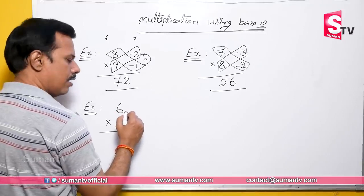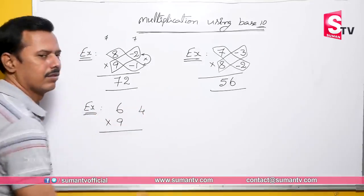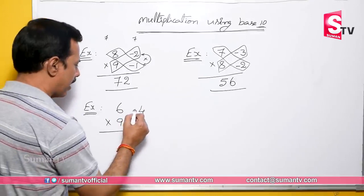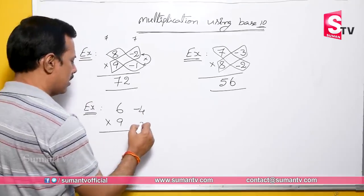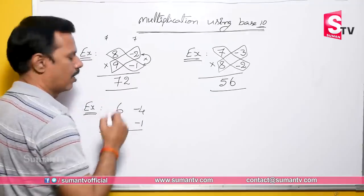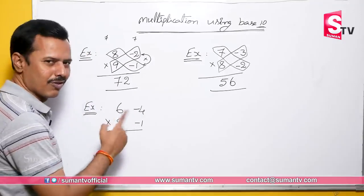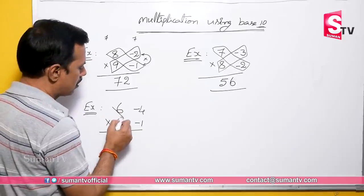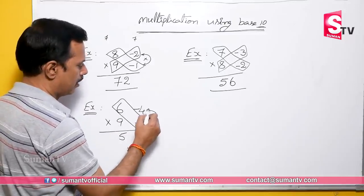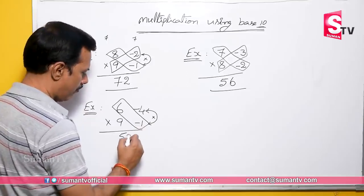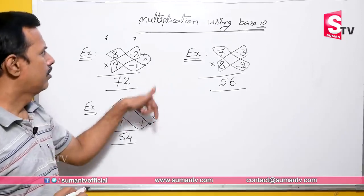So: 6 is less than 10 — it's 4 less than 10, so minus 4. 9 is less than 10 — it's 1 less, so minus 1. Diagonal: 6 minus 1 equals 5. Multiply 4 into 1 equals 4. So 6 times 9 equals 54, using base 10.